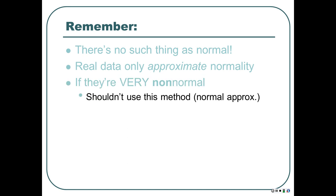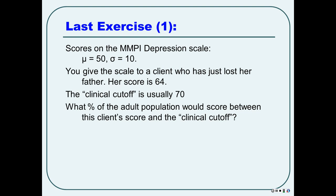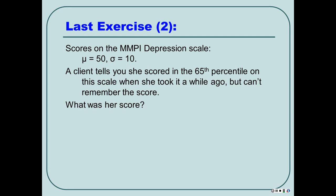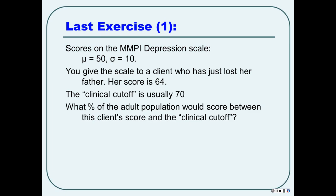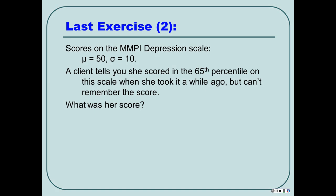Last two exercises. Scores on the MMPI depression scale have a mean of 50 and standard deviation of 10. A client who just lost her father scores 64. The clinical cutoff is usually 70. What percentage of the adult population would score between her score and the clinical cutoff — between 64 and 70? You can also do this backwards: the same scale, but a client tells you she scored in the 65th percentile but can't remember the score. What was her score?